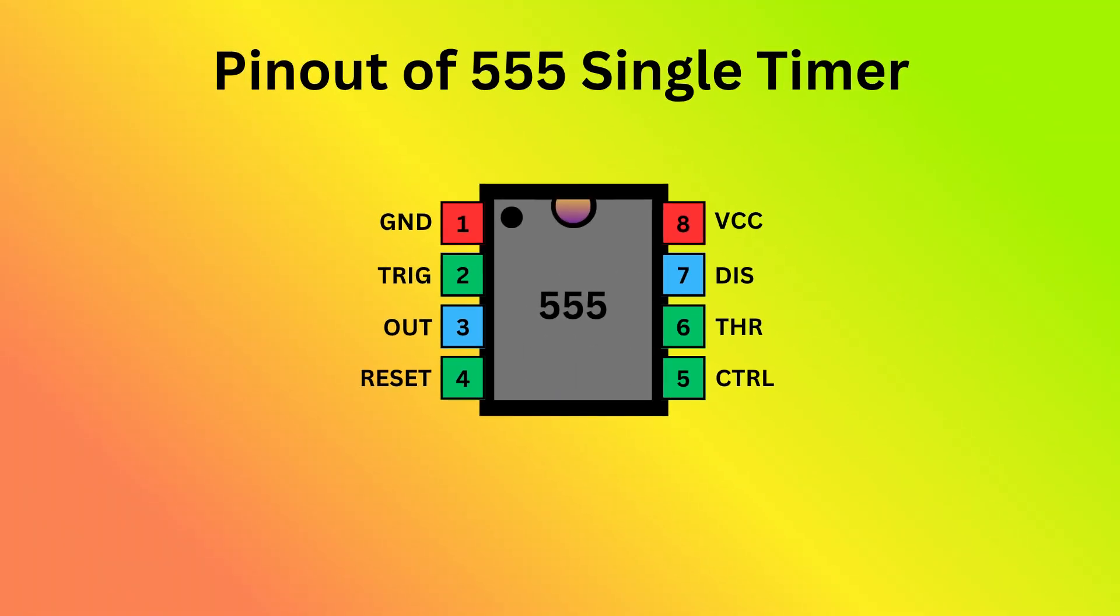The 555 timer IC comes with 8 pins. There is a notch or a dot on the chip's body. Starting from the top left is pin 1, which is ground or the ground supply. Pin 2 is trigger. It is used to start the timing interval in both monostable and astable modes.